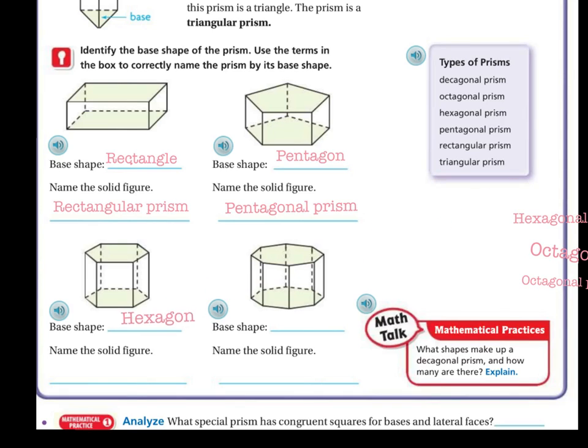You can refer back to the lesson that I did a few days ago. And so since the base shape is a hexagon, then the solid figure is called a hexagonal prism.